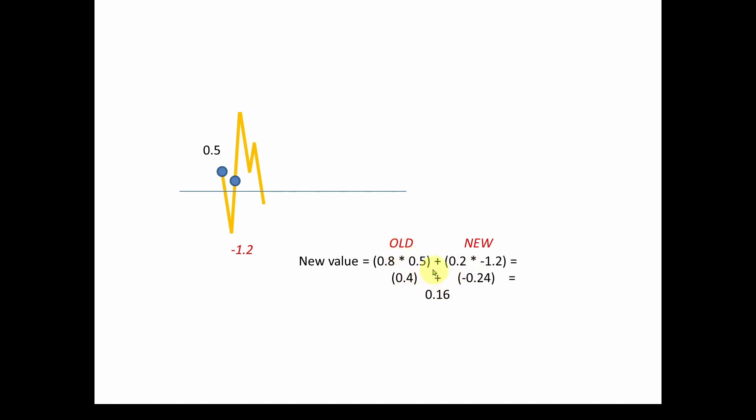Now, as with anything in the science engineering world, every solution has pros and it has cons. It has costs and it has benefits. So let's look at one of the negatives about this. So the big problem is what if the new value, in this case, minus 1.2, is actually 100% correct?